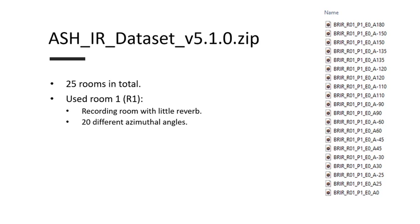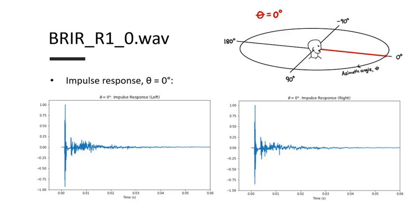Let's listen to a few of them. Here's the B-R-I-R when the azimuthal angle, which I've called theta, is equal to zero. From listening to the audio and looking at the impulse functions for the left and right channel, we really can't differentiate between the two impulse responses. This is because the distance between the source and the listener is the same when theta equals zero.